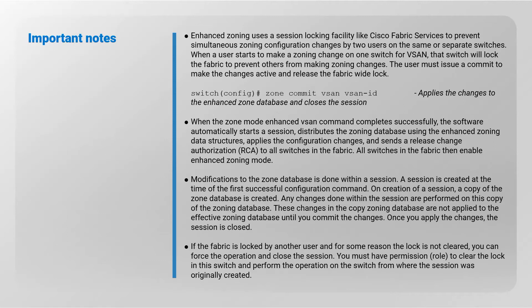Important notes: enhanced zoning uses a session locking facility like Cisco Fabric Services to prevent simultaneous zoning configuration changes by two users on the same or separate switches. When a user starts to make a zoning change on one switch for a VSAN, that switch will lock the fabric to prevent others from making zoning changes. The user must issue a commit to make the changes active and release the fabric write lock. This command applies the changes to the enhanced zone database and closes the session. When the zone mode enhanced VSAN command completes successfully, the software automatically starts a session, distributes the zoning database using the enhanced zoning data structures, applies the configuration changes, and sends a release change authorization to all switches in the fabric. All switches in the fabric then enable enhanced zoning mode.